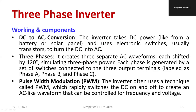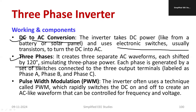Regarding the working and components: first, DC to AC conversion — we have a DC supply and require power electronic switches such as IGBT and MOSFET, which perform the switching operation. We can adjust the firing angle delay. There are two types of delay: one is 120 degrees and the other is 180 degrees. A suitable PWM technique is also required to control the switches.